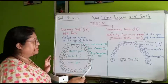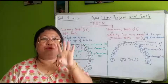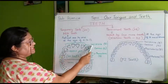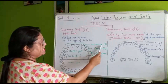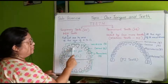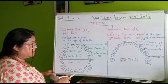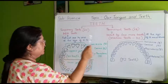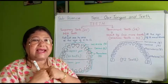The teeth have different names. In front we have four teeth — four on top and four on the bottom. These front teeth are called incisors, spelled I-N-C-I-S-O-R-S. All together we have eight incisors: four on the top and four on the lower jaw.